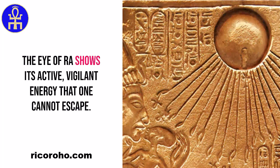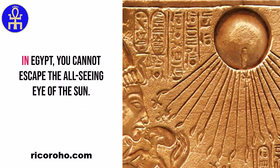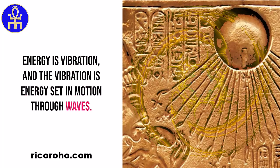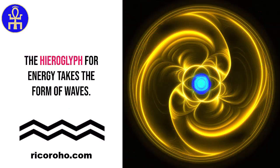The eye of Ra shows its active, vigilant energy that one cannot escape. In Egypt, you cannot escape the all-seeing eye of the sun. Energy is vibration, and vibration is energy set in motion through waves. The hieroglyph for energy takes the form of waves.